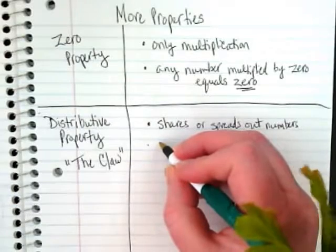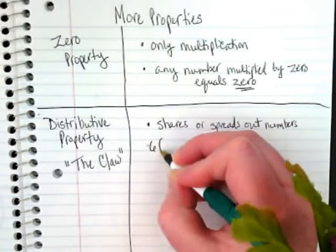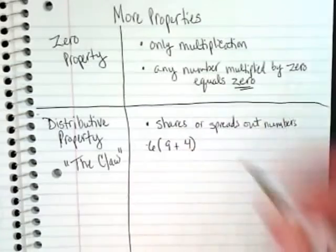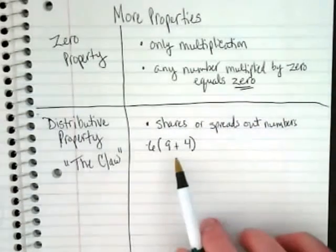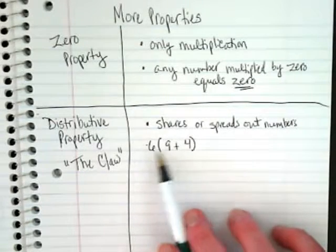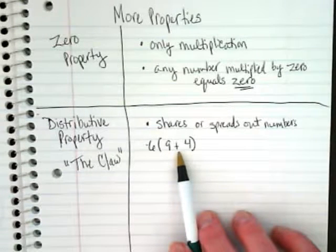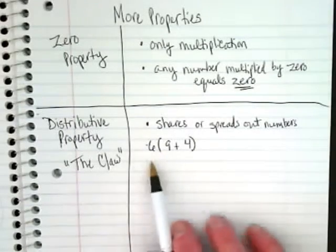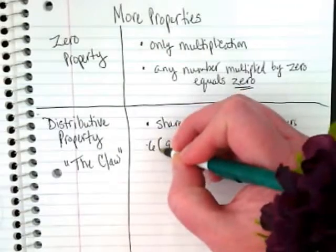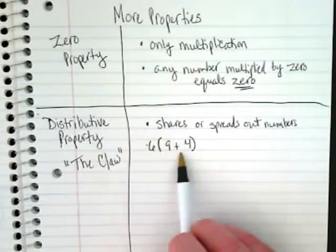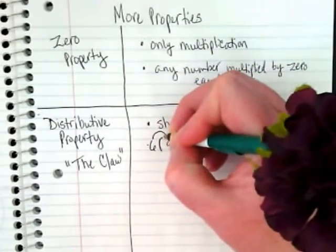So if you have something like six parentheses nine plus four, with order of operations we've been told we should add what's in the parentheses first. Which is true. You could do that. And then we would have to be doing six times 13. Do you guys know six times 13 in your head? It's not a math fact we've learned. We tend to stop at 12, right? When we're learning our multiplication tables. So here's where the claw comes in. Because this six is right next to the parentheses, that means we're multiplying it. And we're multiplying it by everything that's inside this parentheses.